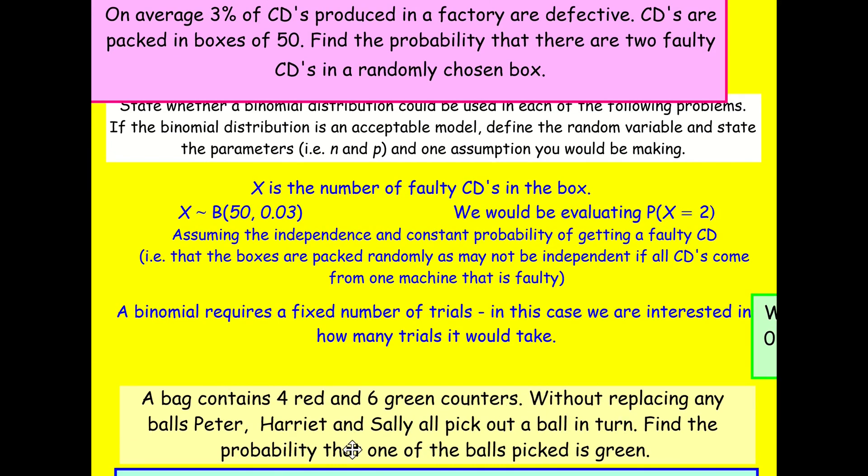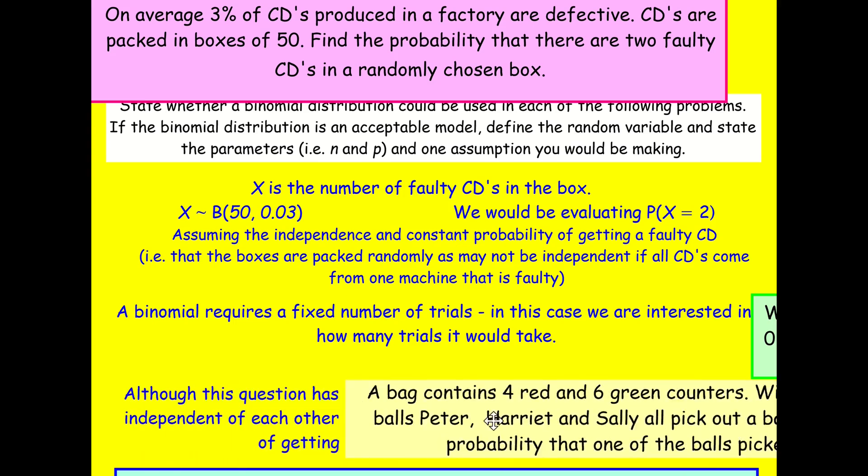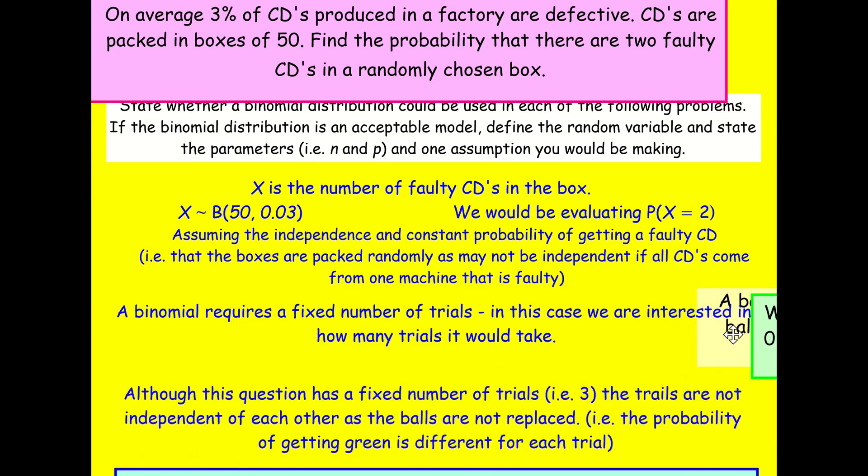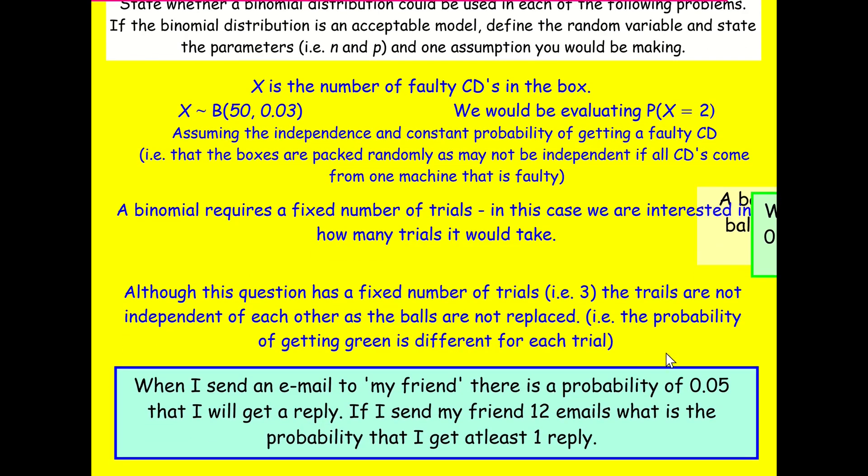How about the next one? A bag contains some red and green counters without replacing any counters. Peter, Harriet and Sally all pick out a counter. Find the probability that one of the counters picked is green. So we've got a fixed number of trials, but it's not independent because if you get a green or you don't get a green, it's going to affect it on the next attempt because they're not being replaced. So be careful about that.